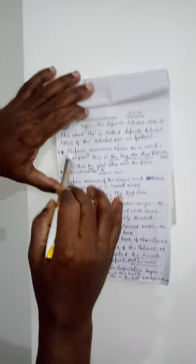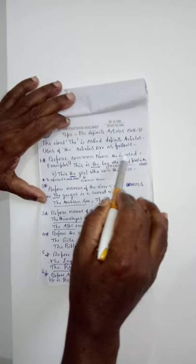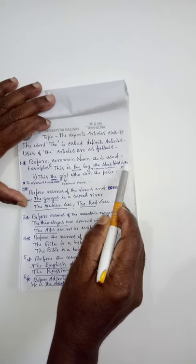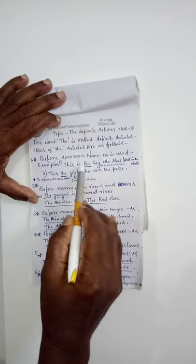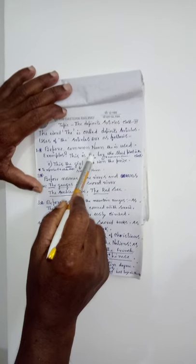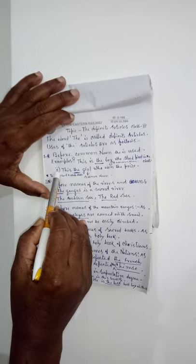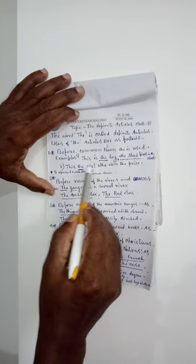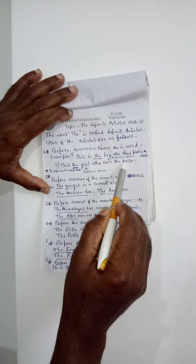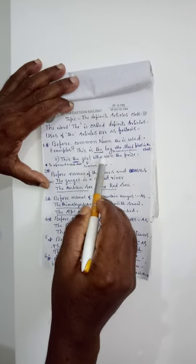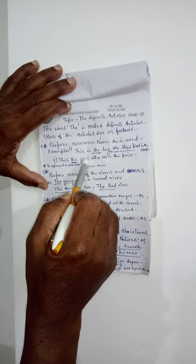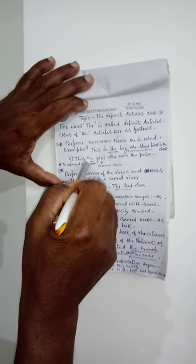Let me recap. First, 'the' is used before a common noun. For example: 'This is the boy who stood first in the class.' Boy is a common noun, and 'the' is used before it. Another example: 'This is the girl who won the prize.' Girl is a common noun, and 'the' is used before it.